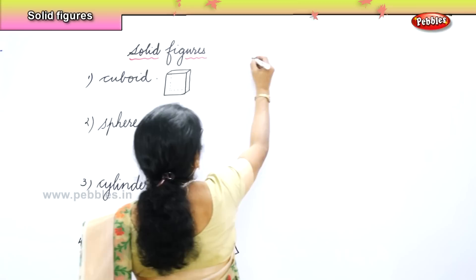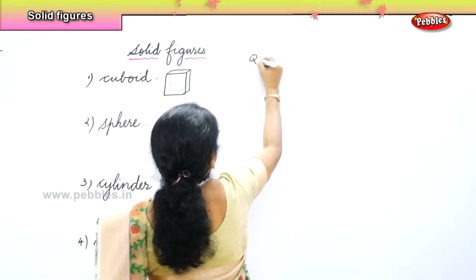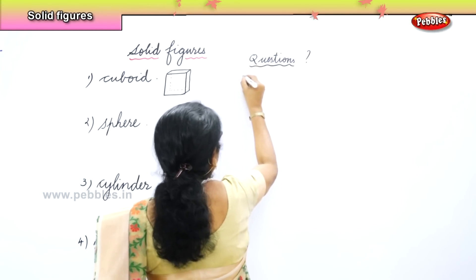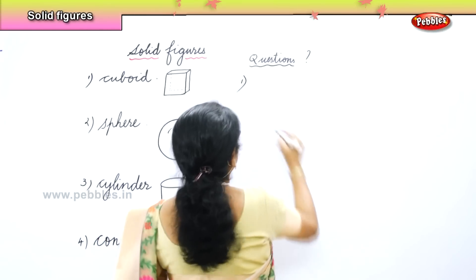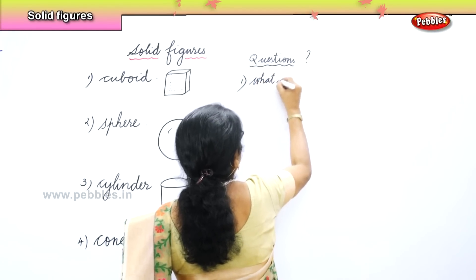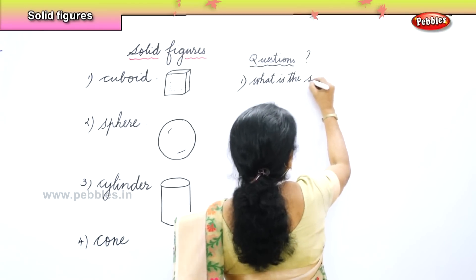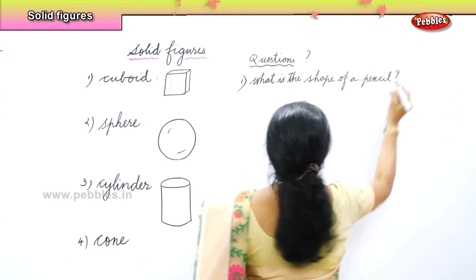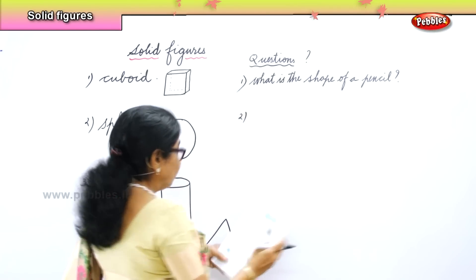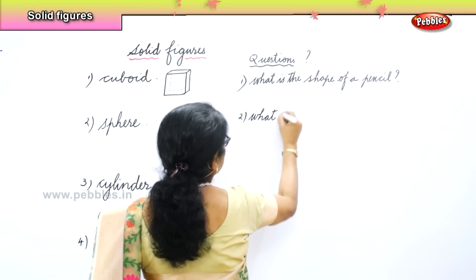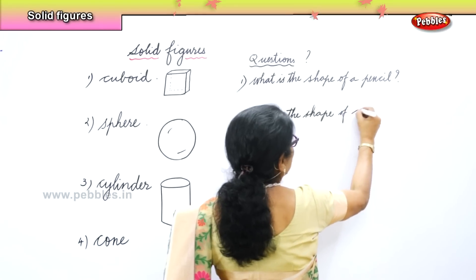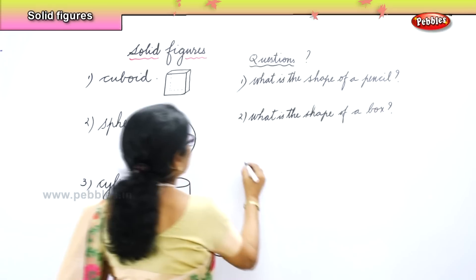I am going to ask you some questions. Question one: what is the shape of a pencil? Question two: what is the shape of a box — any box? Then, what is the shape of a ball? And what is the shape of an ice cream cone?